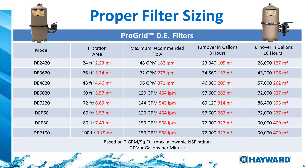Here are the filter recommendations and sizing for DE filters. All filters have a maximum flow rate on the tag — never put a pump that exceeds the filter's maximum flow rate, and never put a filter too small for the pump's maximum flow. For DE filters, we go anywhere between 24 to 100 square feet, with flow rates between 48 GPM and 150 GPM. For example, a 24 square foot DE filter can only handle about 48 GPM; if you put a pump doing 80–90 GPM, that is a mismatch that creates filtration issues.